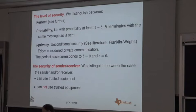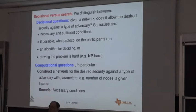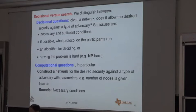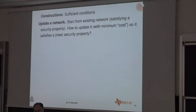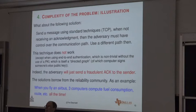We looked at what happens if you cannot use trusted equipment as a sender or receiver. It's not very practical, but in extreme circumstances it would work. There are problems addressed as decision problems versus search problems, and also computational questions. Constructions sometimes provide sufficient conditions. Updated network is a very nice topic with very little done on it — when you have a network that can guarantee reliability and privacy, and you want to grow it, how do you grow it efficiently? That's the update question, but very little has been done on that.